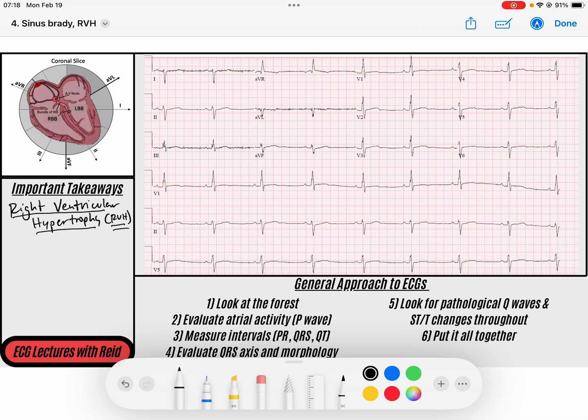As the name suggests, right ventricular hypertrophy is when the right ventricle gets hypertrophied or builds a lot of muscle. This can be pathologic in real life, and it can have certain evidence on ECG.